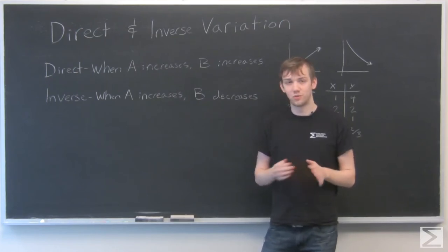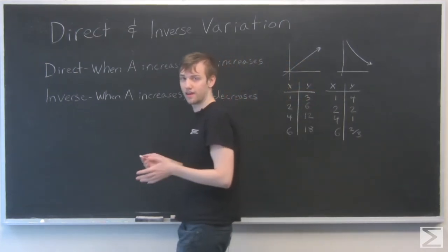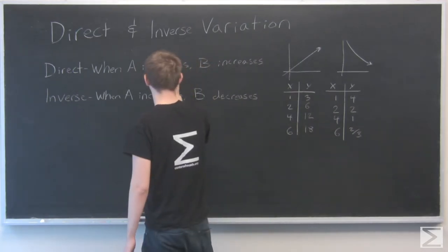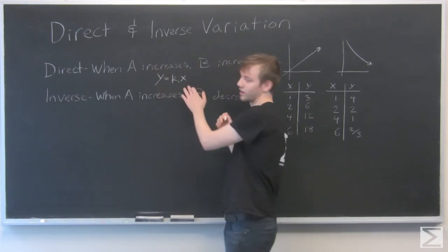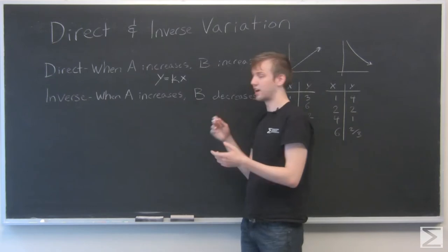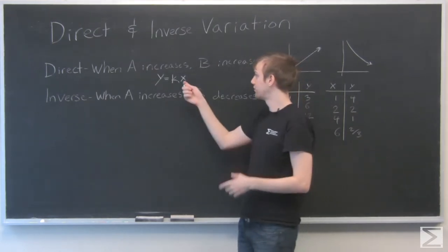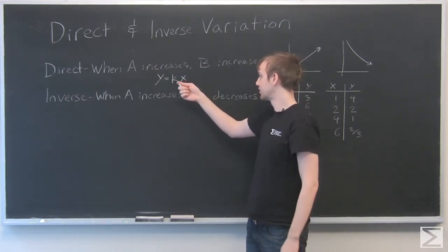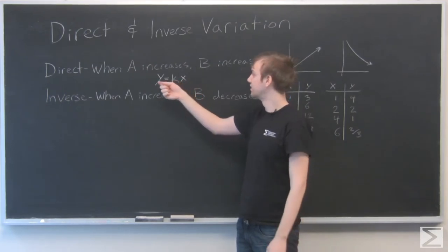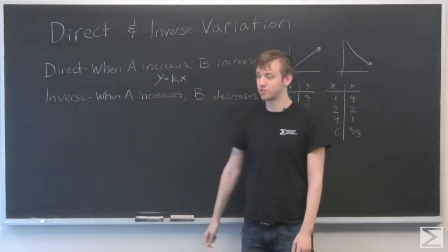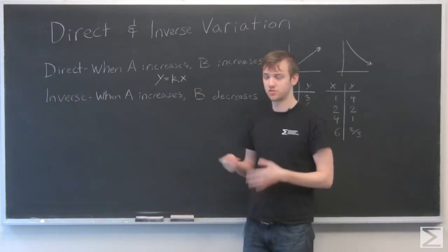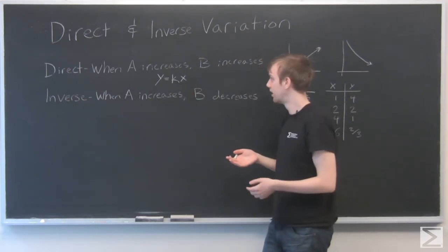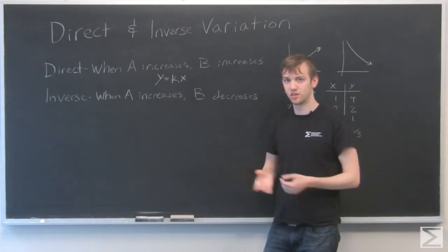And the formula that they want you to use for this is Y equals KX, where Y is one quantity and X is another quantity. And here they have this relationship where they're tied to each other, where if X gets larger, it gets multiplied by a certain constant K, and Y gets larger as well. Whenever we're talking about direct variation, K is always going to be positive. That's just kind of how these problems are written, so that they'll increase along with each other.